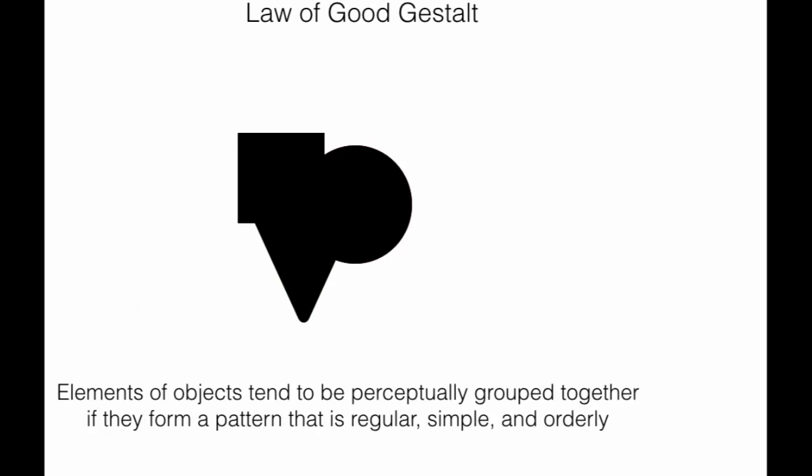Moving on to the law of good Gestalt. We see an image which is made up of a rectangle, a triangle, and a circle. Basically what we are seeing is three different objects instead of one single object. The law of good Gestalt says that elements of an object tend to be perceived or grouped together if they form a pattern that is regular, simple, or orderly.